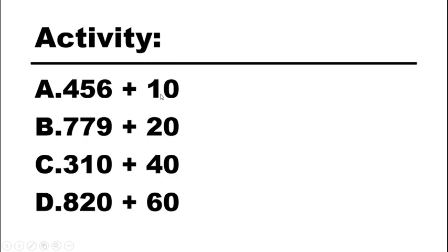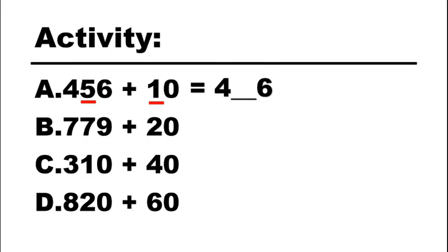Look at the tens digit of your two addends. In your first addend you have five tens, while in your second addend that is one. So we need to add them: five plus one is six. We copy our ones and hundreds as the same number. So the answer to letter A, 456 plus 10, is 466.